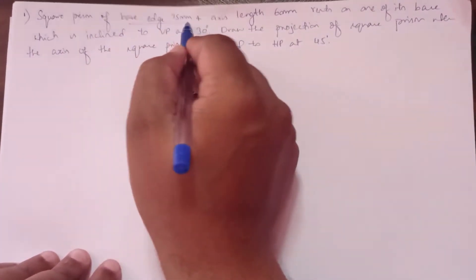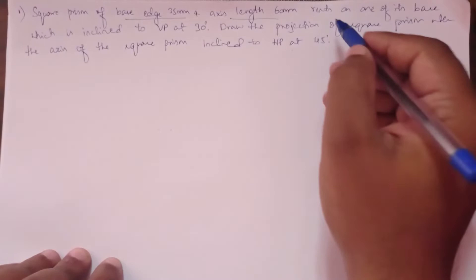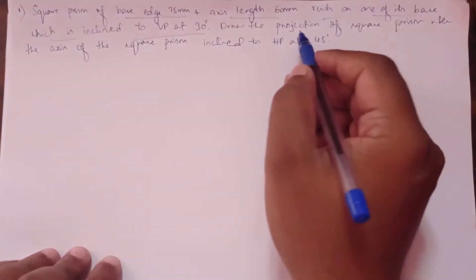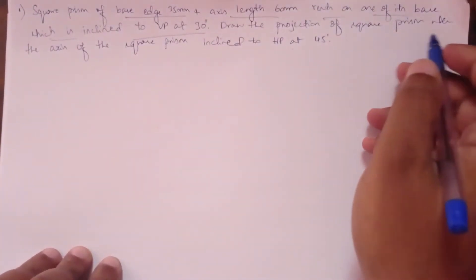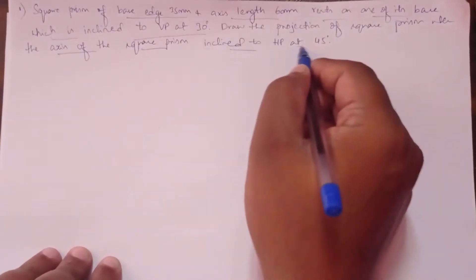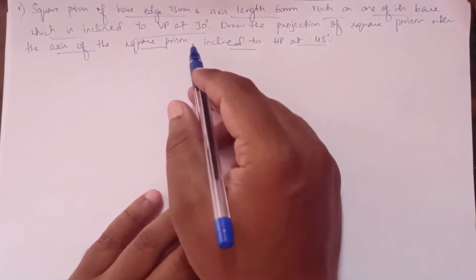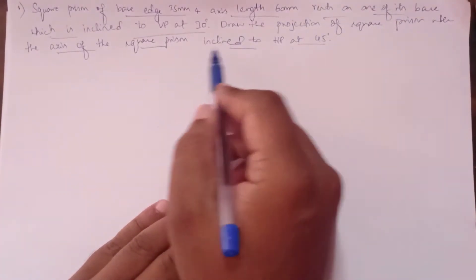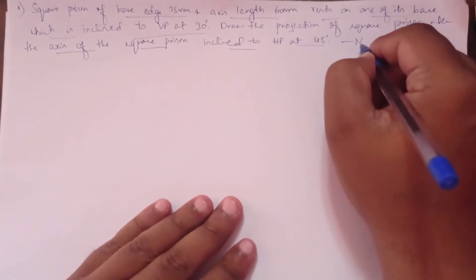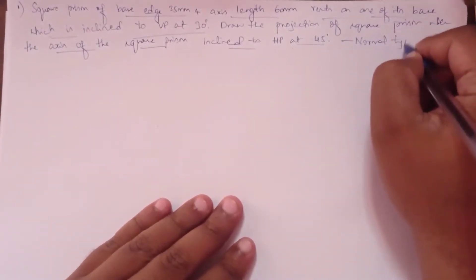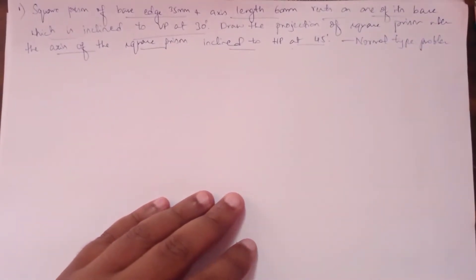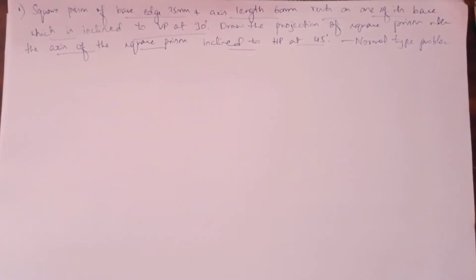A square prism with base edges 35mm and axis length 60mm rests on one of its base edges, which is inclined to VP at 30 degrees. Draw the projections of the square prism when the axis is inclined to HP at 45 degrees. There are two angles of inclination given: one for the base edge and one for the axis, so this is a normal type problem. First, we draw an expo line, then construct according to the procedure.